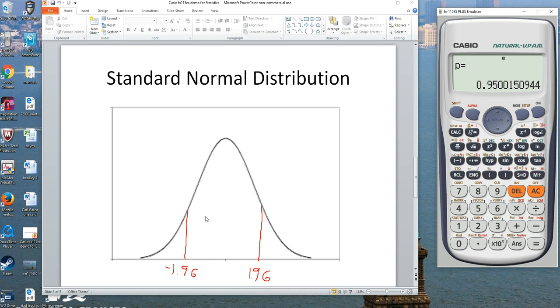Let's try another problem. This time, I want the area between two points, between negative 1.96 and 1.96. Let's say I just want the area in here. Well, let's try that again. Just hit on and it just resets. That's nice.